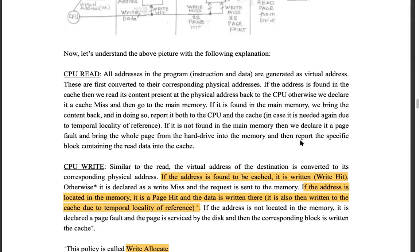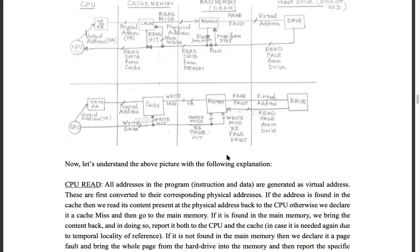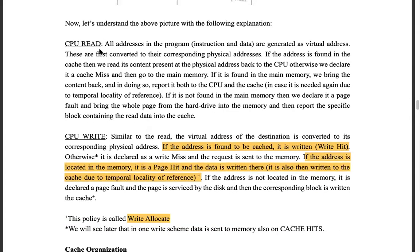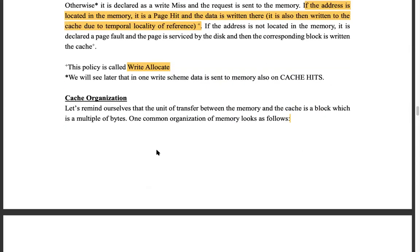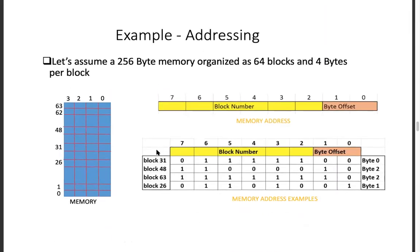Now let's take some examples of how all these things work. You have your main memory which is 256 bytes. This is your main memory — 20 or 30 years back it was still a lot. The gold standard today is like 8 GB or 16 GB.